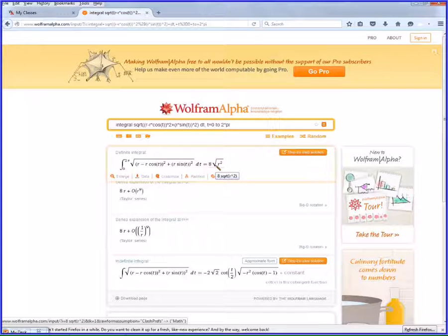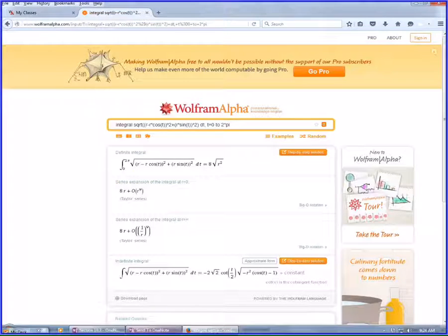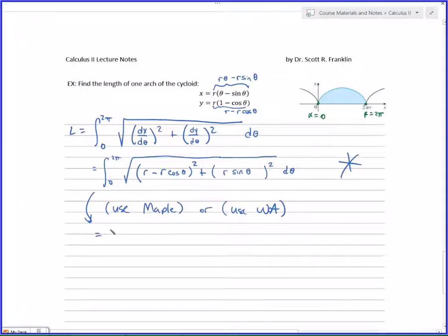And it tells me the answer is 8*sqrt(r^2). Now the reason it doesn't simplify that, it doesn't know anything about r. We know something about r. We know that r is always positive because it's a radius. The square root of r squared, by the way, is technically not just r. It's the absolute value of r because if you have a negative value in for r, the square root and the square doesn't cancel. But we don't have negative values for r in our particular case. So our final answer would be 8r.